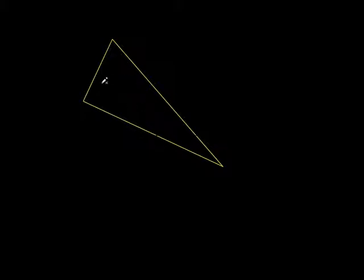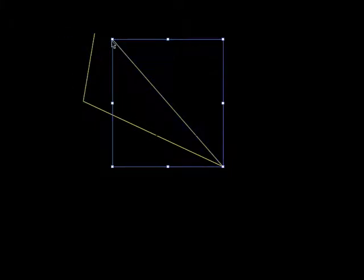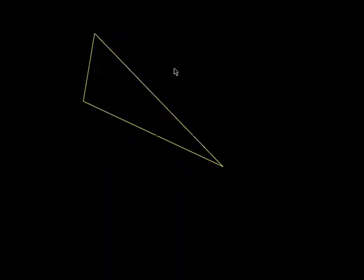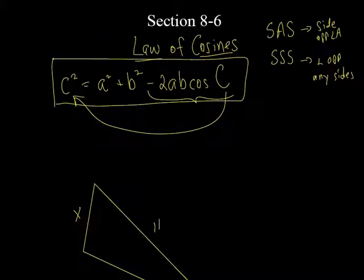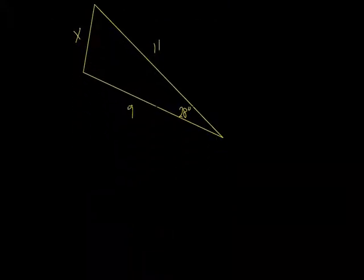They're going to give me this skinny angle of 28 degrees. This side is 9, this side is 11, and they're going to ask you to solve for the missing side x. This is side-angle-side — I've got two sides and the included angle. I can find the side that's opposite that angle.